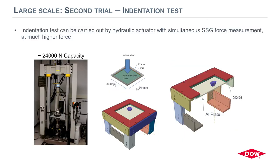We thought about using an indentation test — basically a mechanical pressure test. We use a hydraulic actuator applying pressure at the center of the panel and measure the forces simultaneously. The benefit is we can reach much higher forces. We went back to slightly smaller dimensions: 30 by 30 centimeters (one foot by one foot). We use steel frames — extremely rigid, no deformation — really mimicking what we model, since in our models we always assume perfectly rigid frame conditions, which focuses analysis on the silicone behavior.